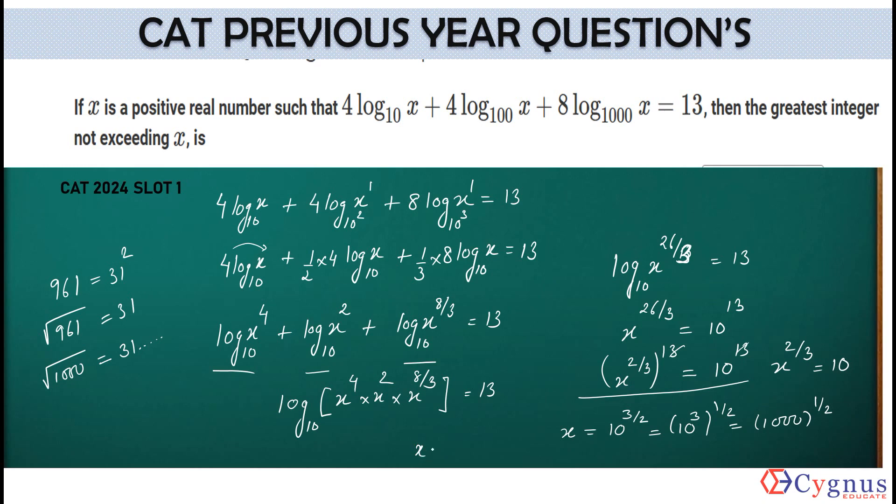So, can we say this x would be equal to 31 point something? Now, what you are asking? What he's asking? Then, the greatest integer not exceeding x. So, the integer not exceeding 31.1, greatest 1, will be how much? 31 point something. The integer less than this would be 31. So, my answer will become 31 here.